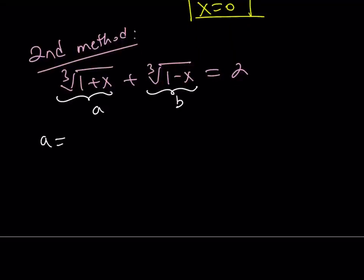So, we have A equals cube root of 1 plus x. Let me rewrite it. A equals cube root of 1 plus x, and B equals cube root of 1 minus x. Great.